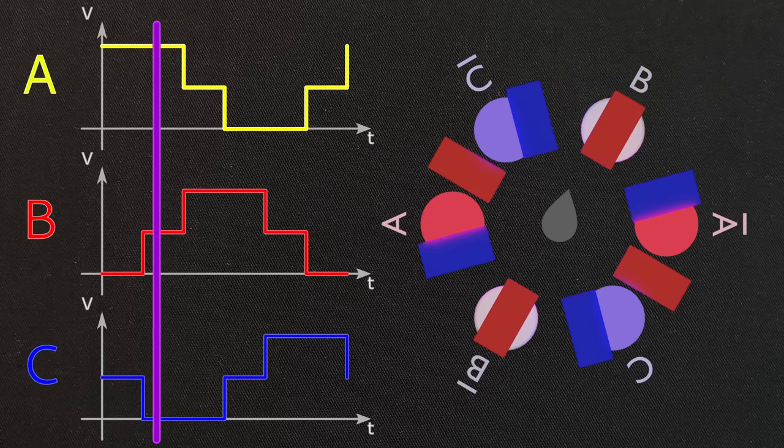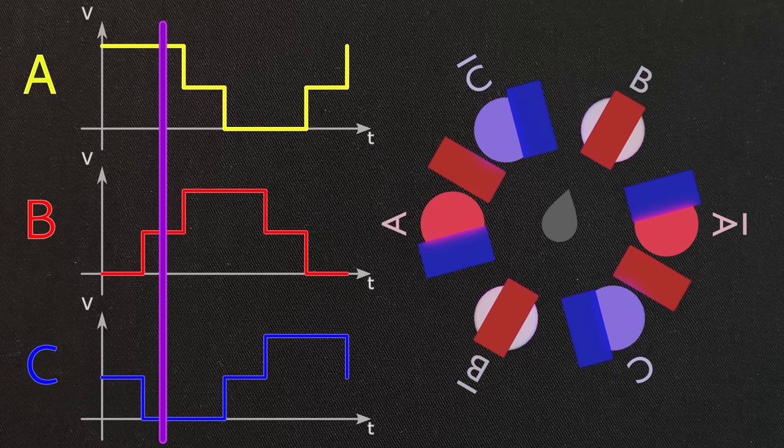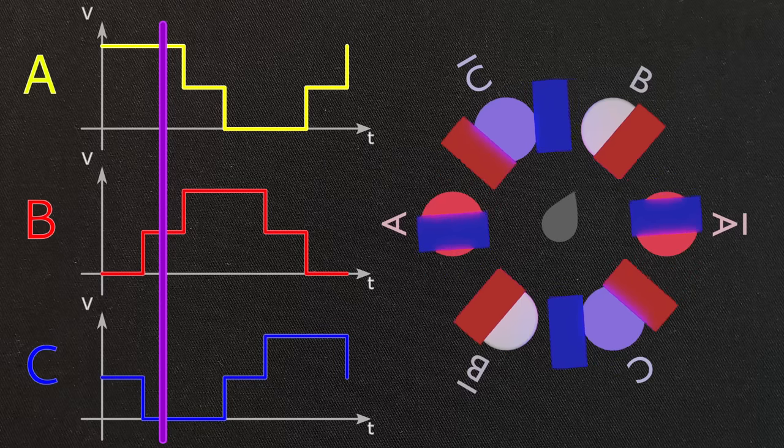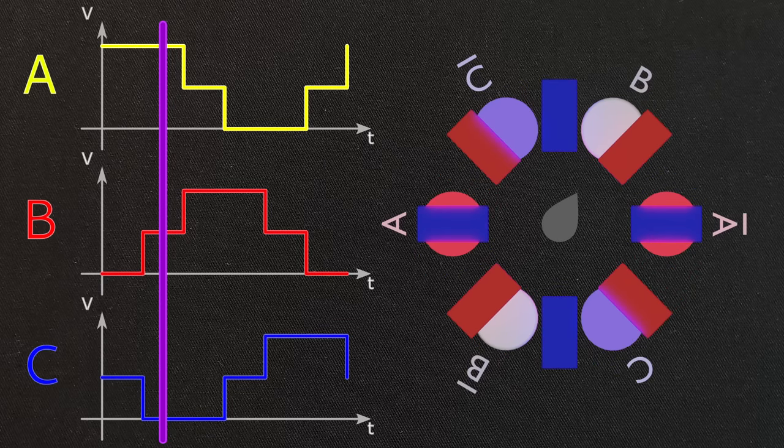Next, phase A remains connected to power, but phase B gets disconnected, while phase C gets connected to ground. This means that phase A electromagnets still generate south poles, but now instead of phase B, phase C generates the north poles. The permanent magnets on the rotor then once again rotate to match the electromagnet poles.